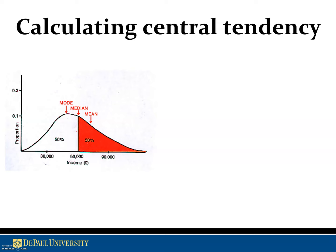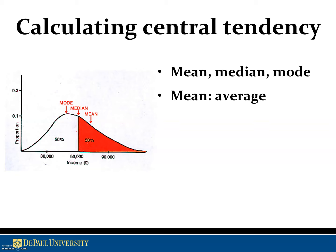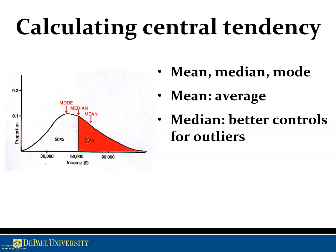We start out with calculating central tendency, and just like the graphic represents, that refers to mode, median, and mean. Mean is just your typical average — you take a variety of numbers, sum them up, and divide by the total, or N. The problem is that it doesn't always account for the different spread of the data.